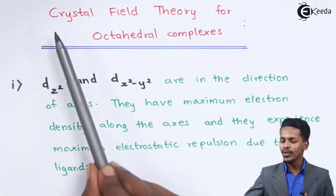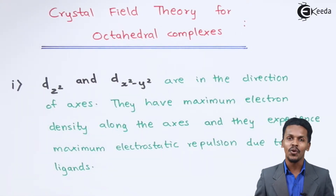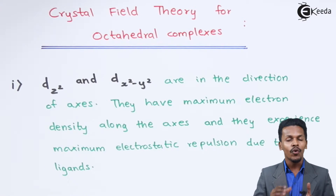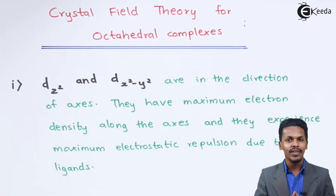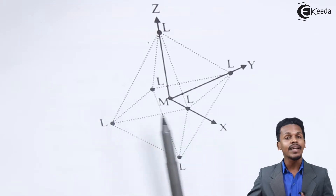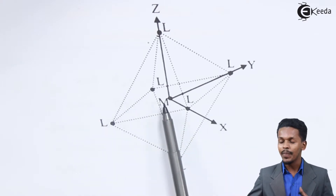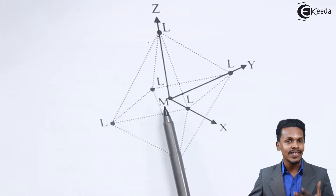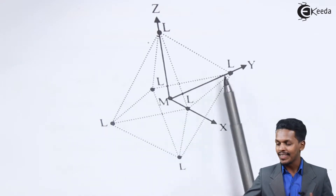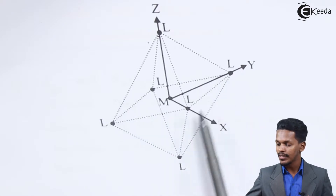So friends, here we are going to talk about the crystal field theory for the octahedral complexes. For that we have to understand a particular diagram. This is nothing but an octahedron where we can find that the metal is at the center, and there are basically 6 ligands.